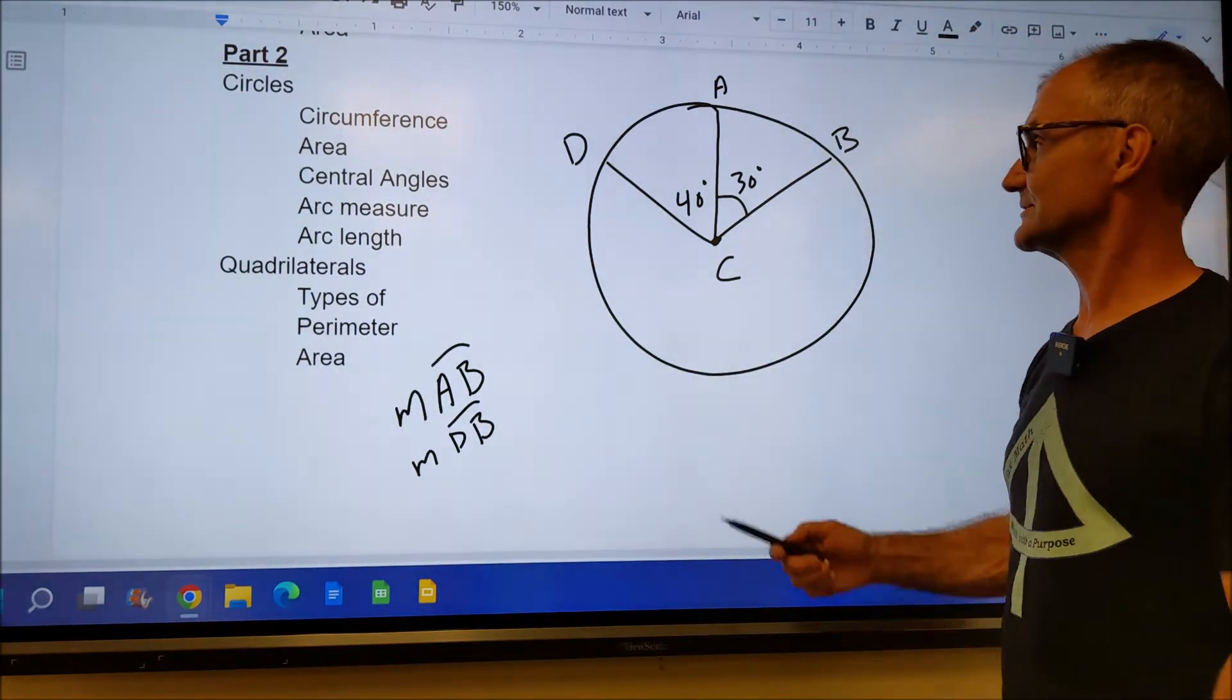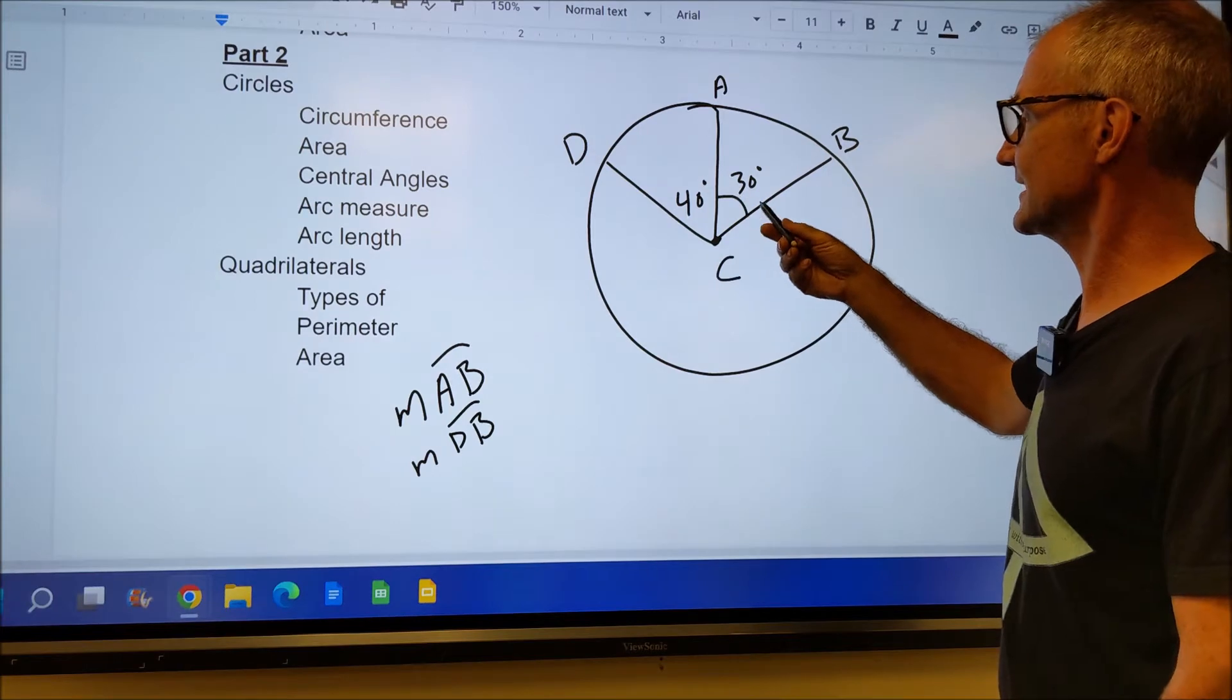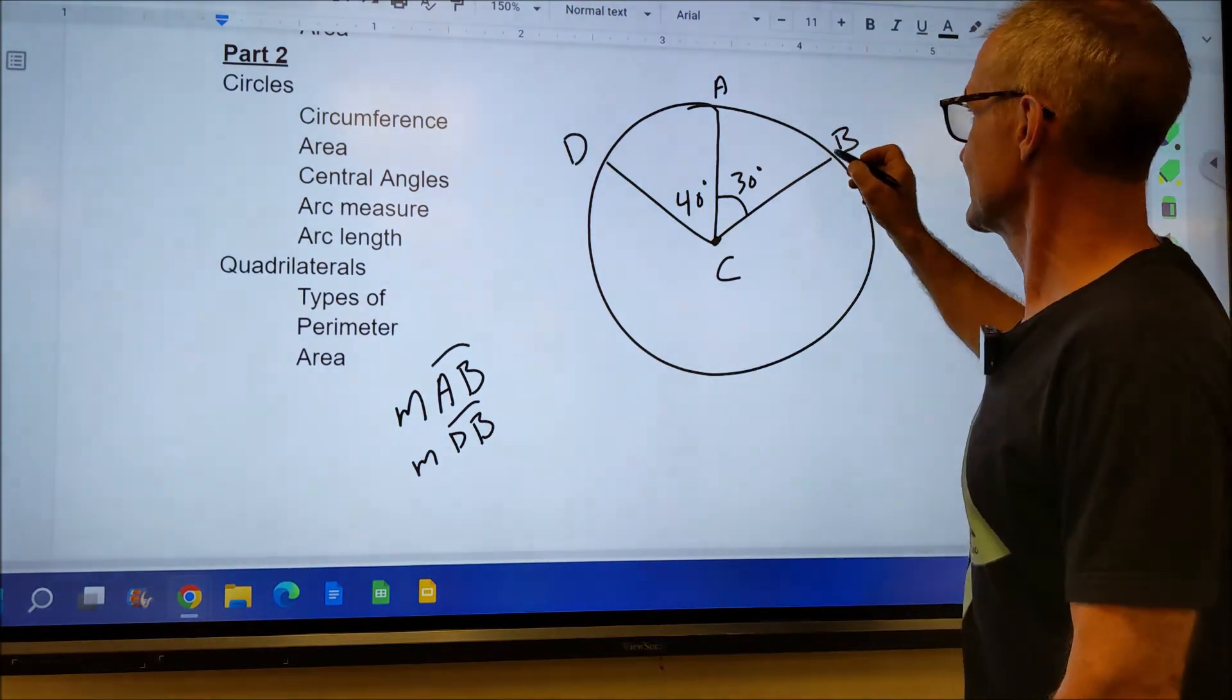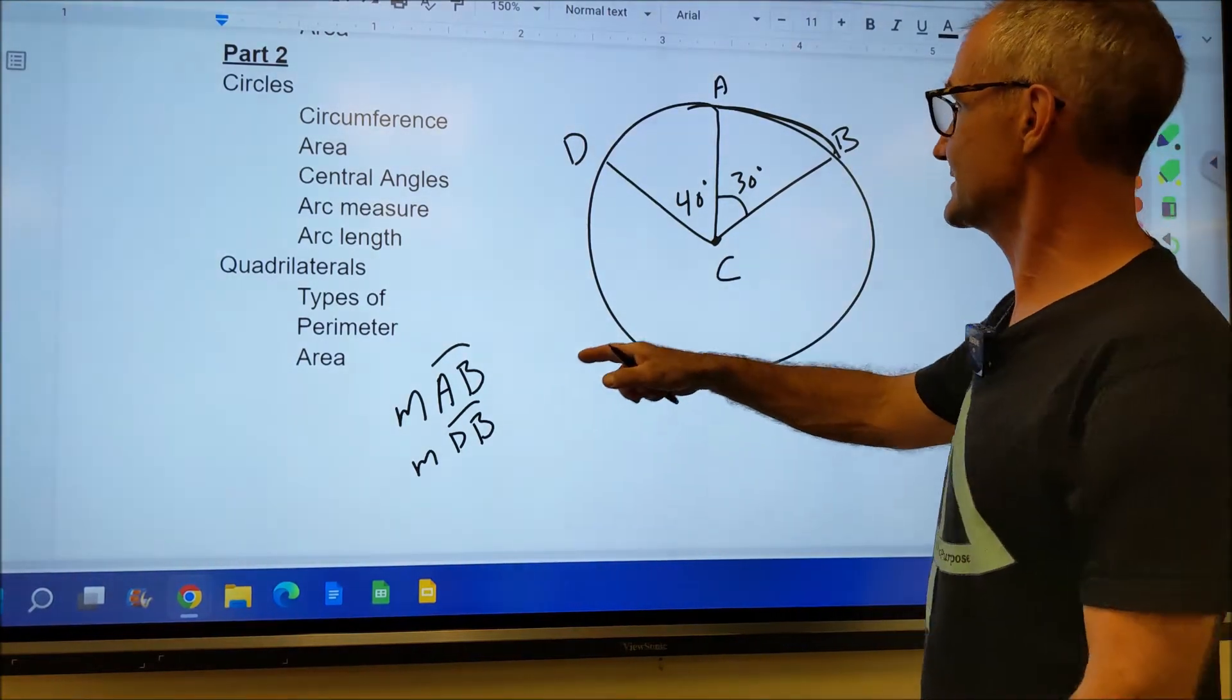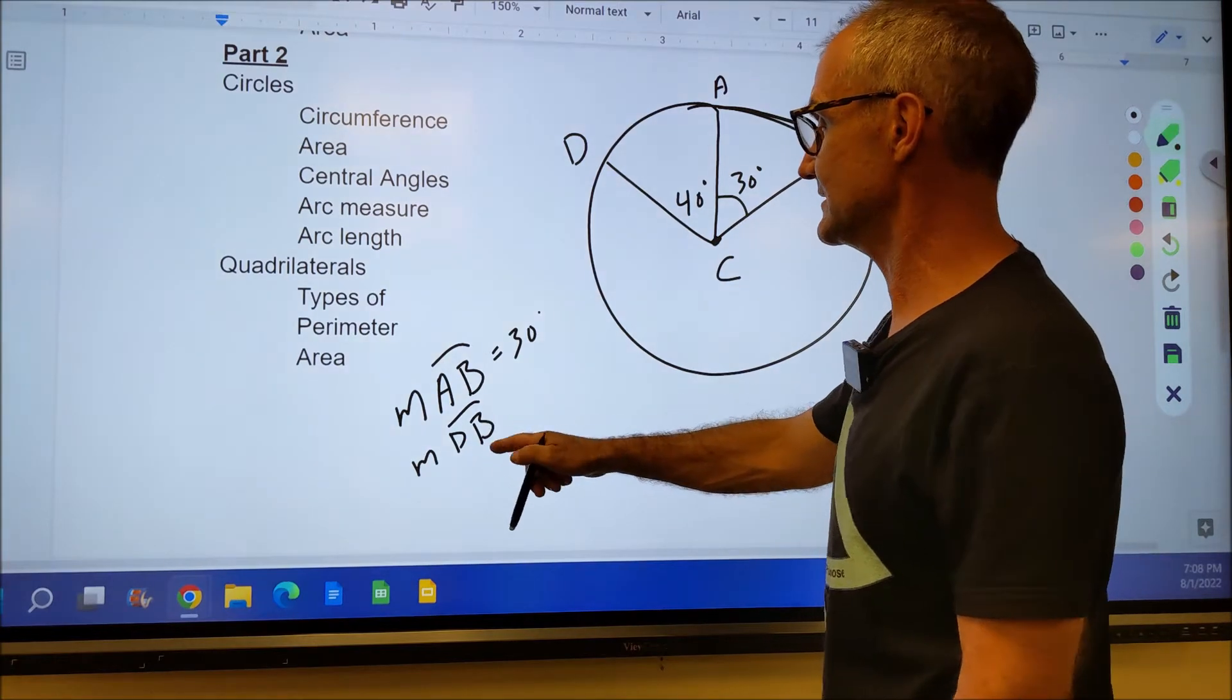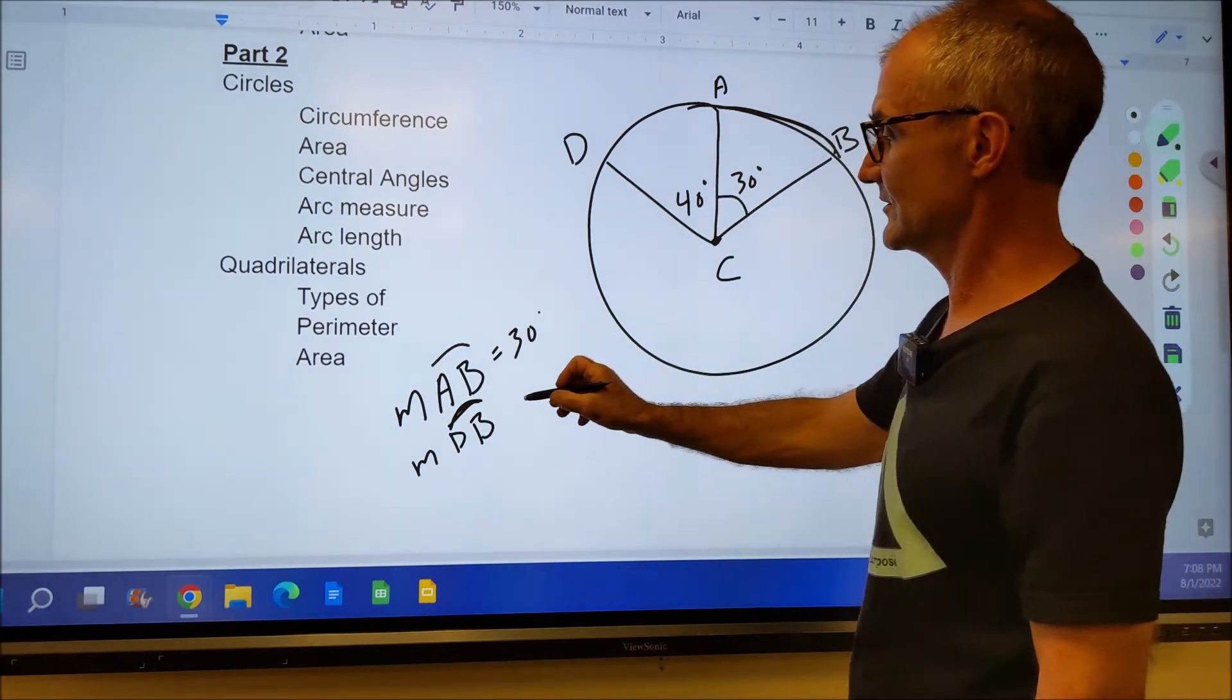Here's another example. Let's say I have a circle centered at point C with points A, B, and D on the circumference. These interior central angles are 30 degrees and 40 degrees. The measure of arc AB is the same as that central angle, is 30 degrees. What's the measure of arc DB? Well, the arc measure right there is 40 plus 30, or 70 degrees.